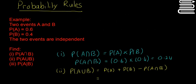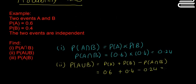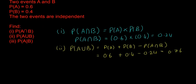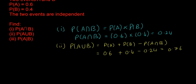The point I'm trying to make is that the formula still makes sense. So 0.6 plus 0.4 minus 0.24 gives us an answer of 0.76. The last one is the probability of A given B.